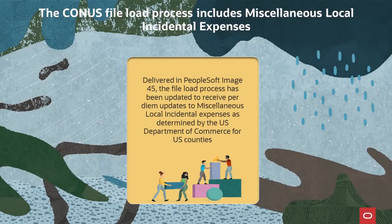The CONUS file load process is updated to include the local incidental expenses. The U.S. Department of Commerce establishes the travel per diem reimbursement rates for the continental United States, or CONUS, which includes the 48 contiguous states and the District of Columbia. Federal agencies use the per diem rates to reimburse their employees for subsistence expenses incurred while on official travel. Federal per diem reimbursement rates consist of a maximum lodging allowance component and a meals and incidental expenses component. In PeopleSoft Update Image 45, we updated the PeopleSoft tables to accept the new meals and incidental expenses data with the updates.